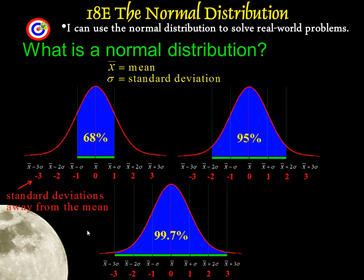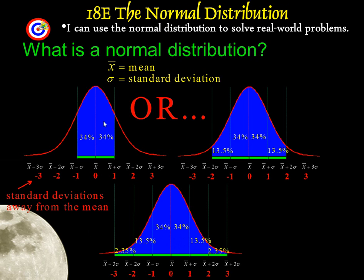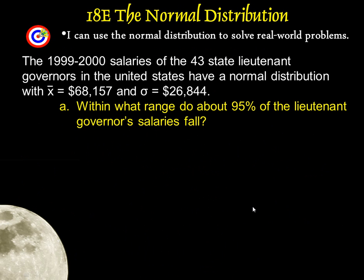Another way to look at that, if you split it up instead of the 68, you got 34 in each of these sections, 13 and a half in each of these in the second standard deviation away, and then 2.35 is in the third standard deviation out. So again, that's the 68, 95, 99.7 rule. With that, let's take a look at some examples.